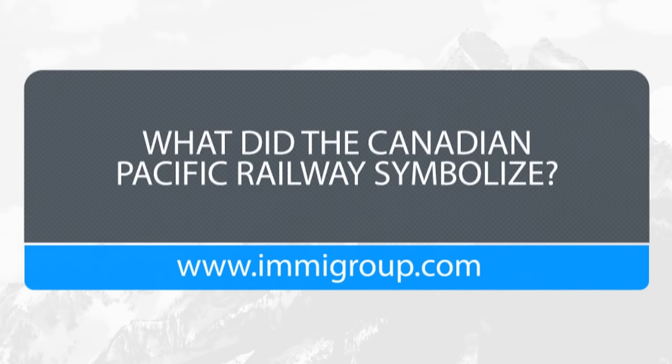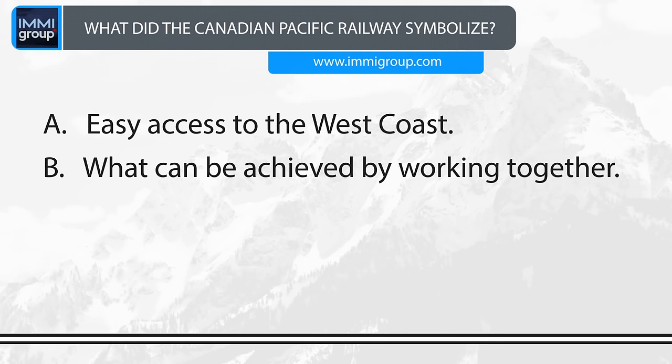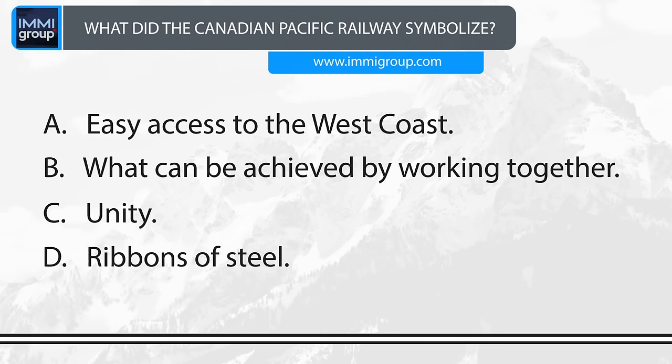What did the Canadian Pacific Railway symbolise? A. Easy access to the West Coast. B. What can be achieved by working together. C. Unity. D. Ribbons of Steel. Answer: Unity.